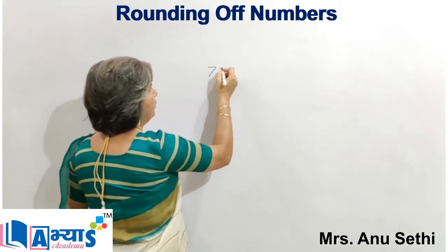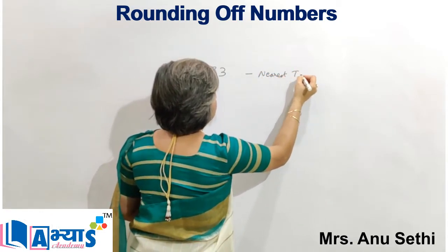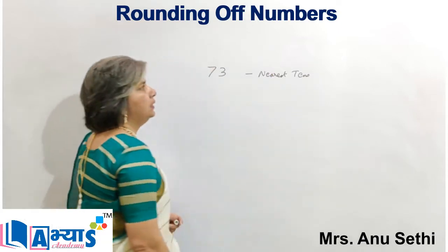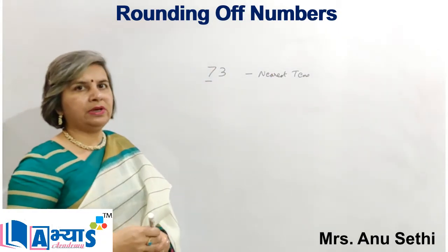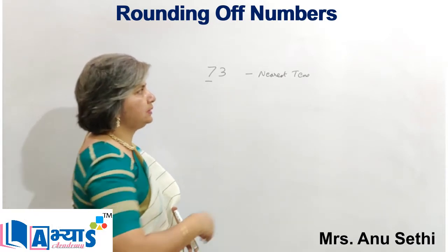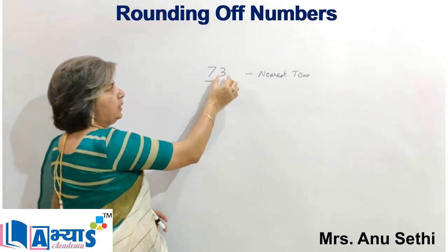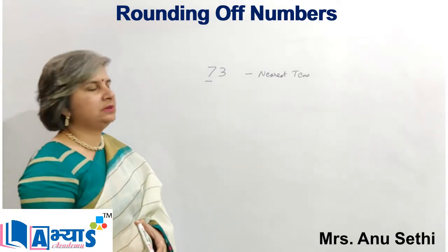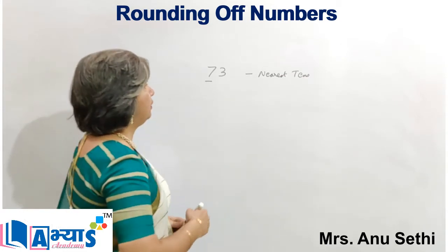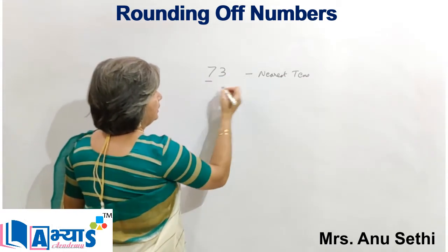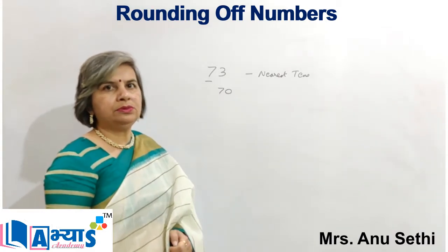For example, if I have to round off 73 to the nearest tens, we will identify the tens position. We take 7 as it is and look at the units digit, which is 3. Since 3 is less than 5, the rounding off of 73 to the nearest tens will be 70, because 70 is closer to 73.